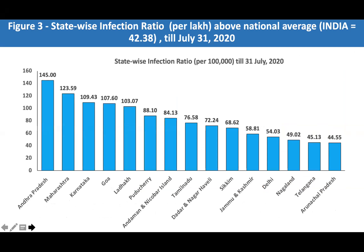This figure shows the state-wise infection ratio per 100,000 for states above the national average. The variation ranged from 145 per 100,000 to 44.5. This includes Pondicherry in the southern part, Maharashtra in the western part — identified as a hotspot — and Manipur in the northeast. Some states are above the national average, while others are much lower, though those are not shown here.